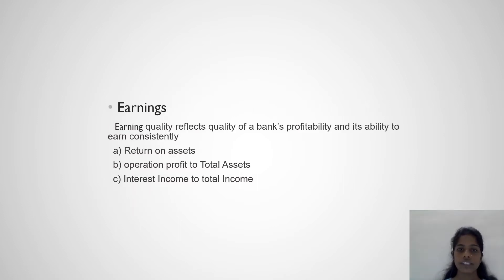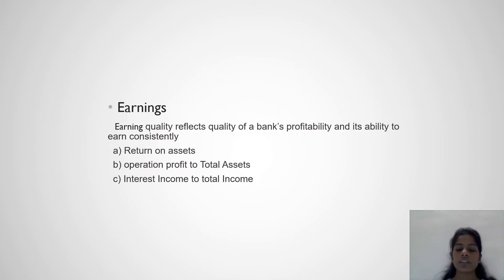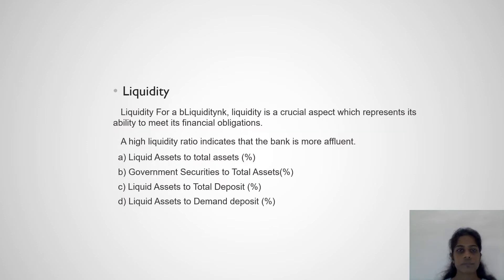Earnings quality reflects the quality of a bank's profitability and its ability to earn consistently. Key ratios include Return on Assets, Operating Profit to Total Assets, and Interest Income to Total Income.